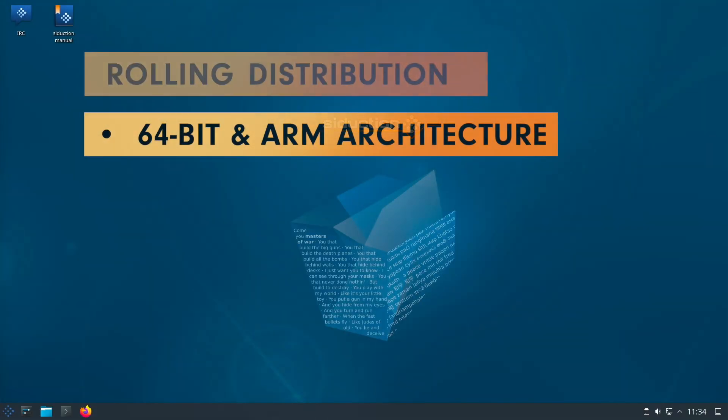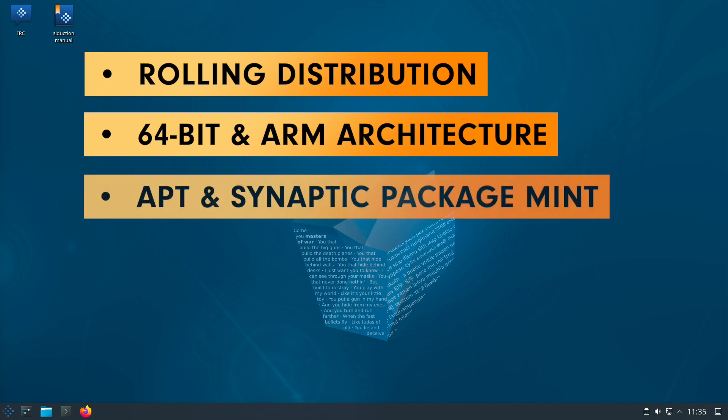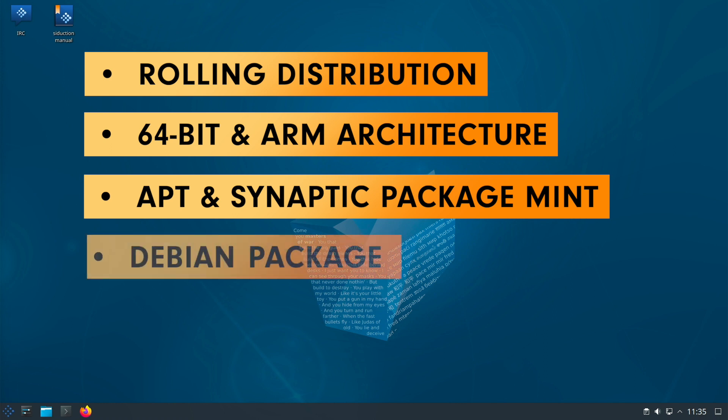Siduction is a rolling distribution, meaning there is always a brand new software and app stack. As package management, there is APT at hand, but in addition, depending upon the desktop, a further solution — for example Discover with KDE Plasma — is provided. Synaptic is also available. The Debian package format is used. Flatpak is basically on board, but without Flathub as a source.